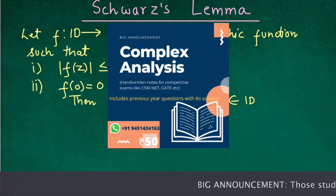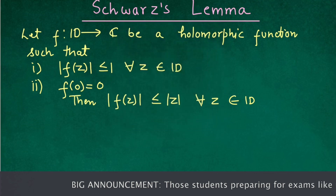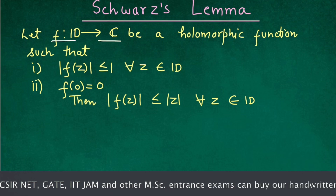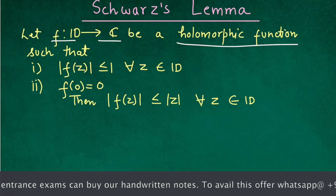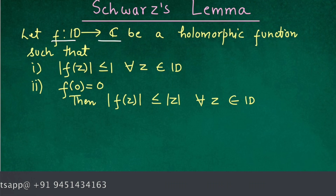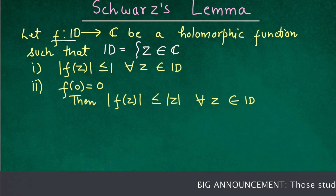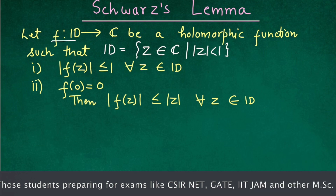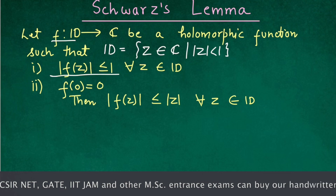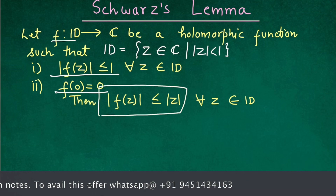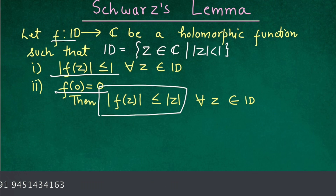Welcome to the channel Master of Graduates. Today we will see the proof of Schwarz Lemma. The statement of the theorem is: we have a function f from unit disk D to the complex plane C, and this function f is a holomorphic function. The unit disk D is defined as the set of z from the complex plane where the modulus of z is less than 1. Further conditions are: if the modulus of f(z) is less than 1 and f(0) = 0, then the modulus of f(z) is less than or equal to the modulus of z.